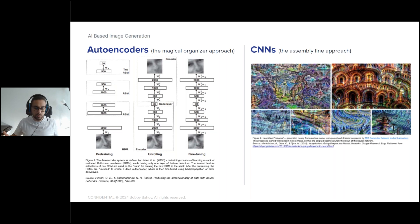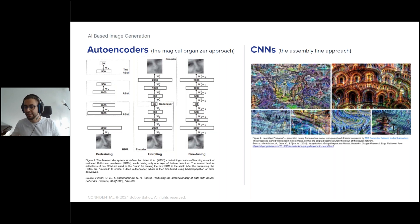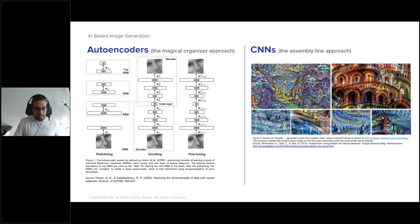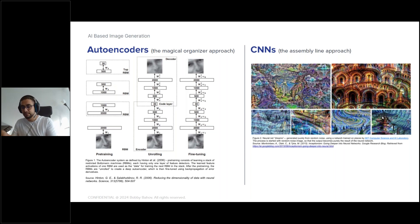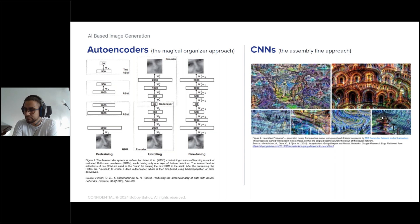Think of CNNs like an assembly line in a factory for creating an image. At each station a different expert handles a different part until you get the final image. Starting with overall shapes, then going deeper into details — if generating a dog, we start with the silhouette, then fur colors, then details of its nose or tail, until we eventually have a dog.